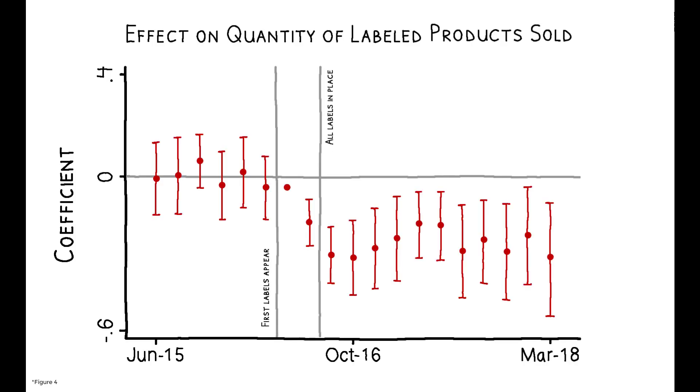Post-Food Act, the quantity of labeled products sold relative to unlabeled ones fell by an average of 26.4 percent.